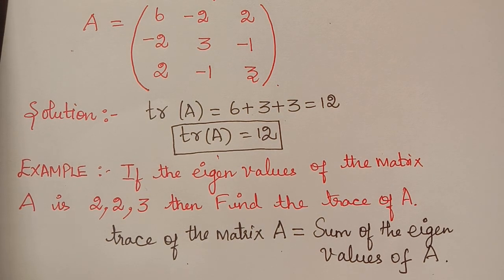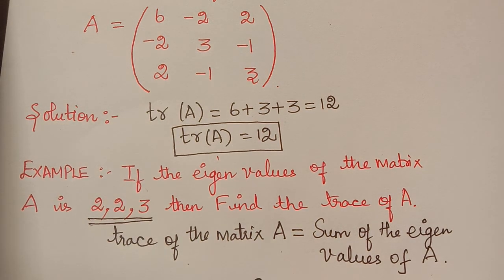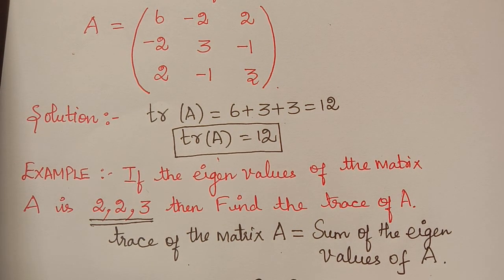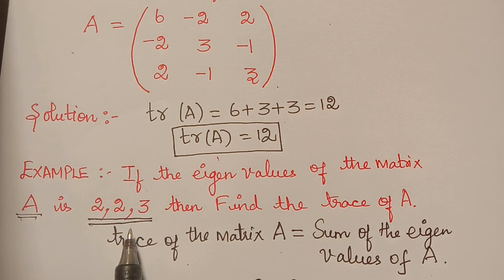So that is equal to—the eigenvalues are 2, 2, 3—so it will be 2 plus 2 plus 3, which is equal to 7. So the trace of the matrix A is 7 in this case.